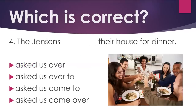Question 4. The Jensens _____ their house for dinner. Asked us over, asked us over to, asked us come to, asked us come over. The answer is: asked us over to.